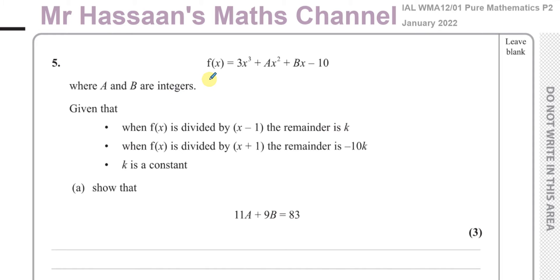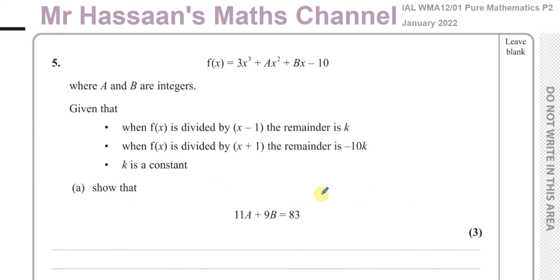It says f(x) equals 3x cubed plus ax squared plus bx minus 10, where a and b are integers. Given that when f(x) is divided by x minus 1 the remainder is k, and when f(x) is divided by x plus 1 the remainder is negative 10k, where k is a constant — show that 11a plus 9b equals 83.